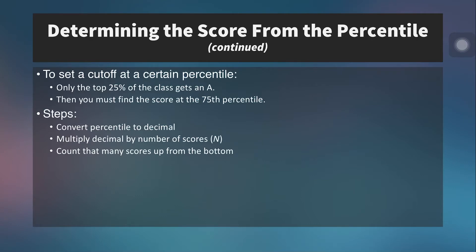Sometimes it's important to set a cutoff percentile — for example, an admissions team setting a minimum percentile on a standardized test. You'd need to figure out what raw score falls at that percentile, and it may change year to year. If only the top 25% of a class gets an A, subtract 25 from 100 to get the 75th percentile, then convert to a decimal, multiply by the number of scores, and count that many scores up from the bottom.